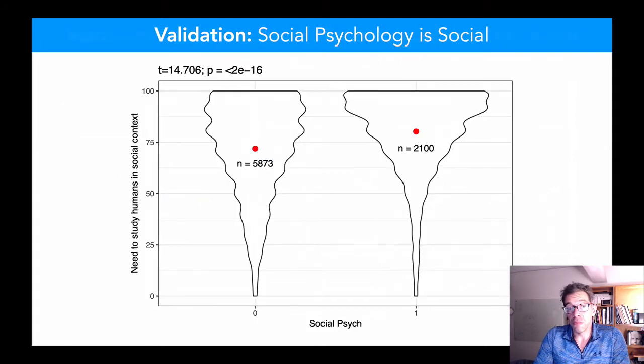Social psychology is social. People, the sample as a whole, endorses the importance of social context, but social psychologists endorse it even more.